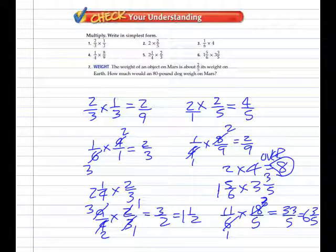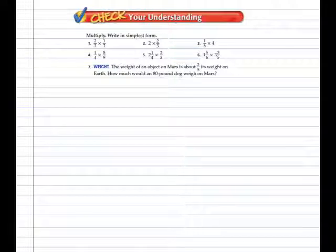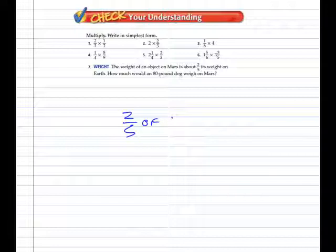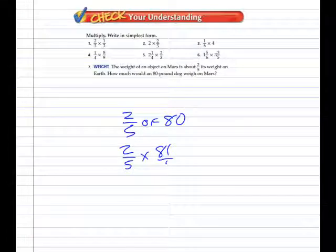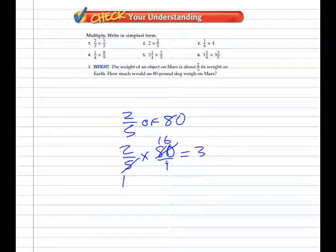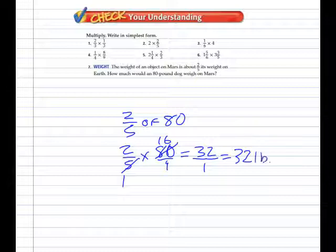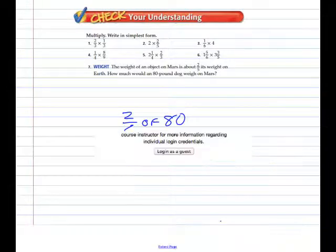Last understanding problem, number seven: the weight of an object on Mars is two-fifths of its weight on Earth. How much would an eighty-pound dog weigh on Mars? Two-fifths of eighty: two-fifths times eighty over one. Divide eighty by five to get sixteen; two times sixteen is thirty-two over one, which is thirty-two. So the eighty-pound dog on Earth weighs thirty-two pounds on Mars.